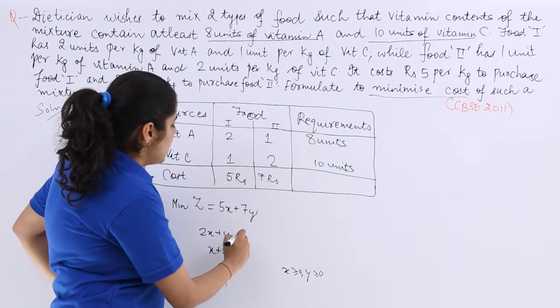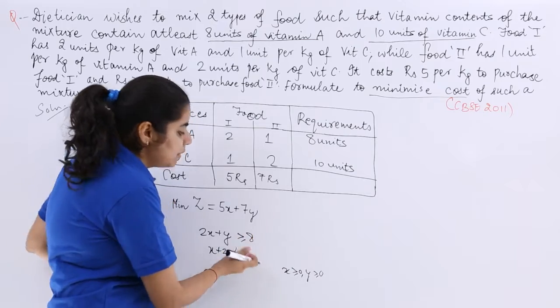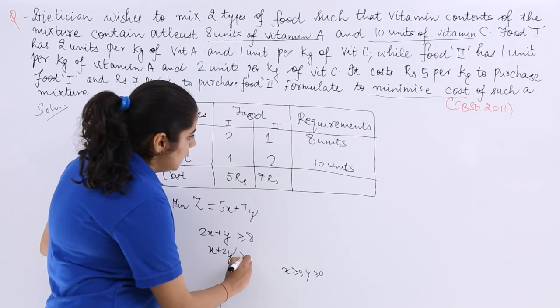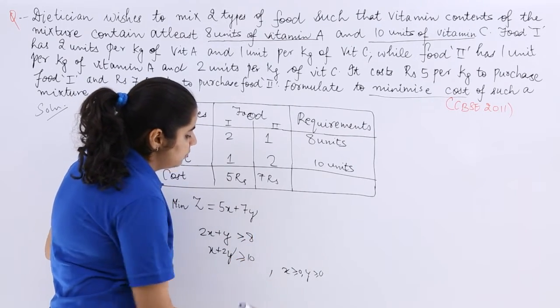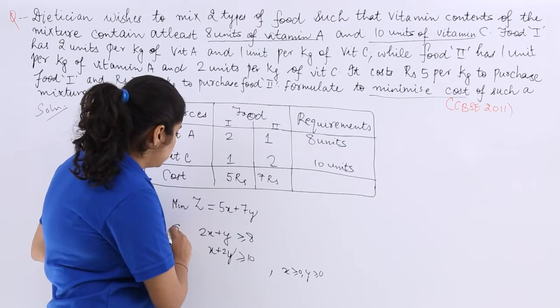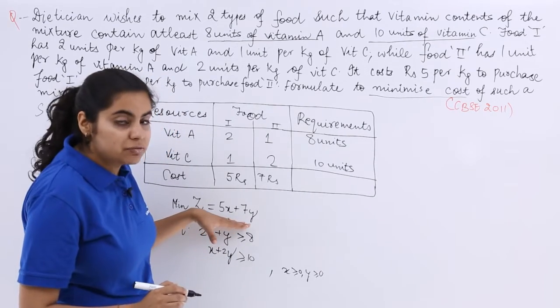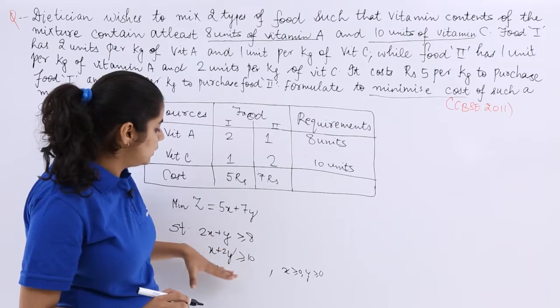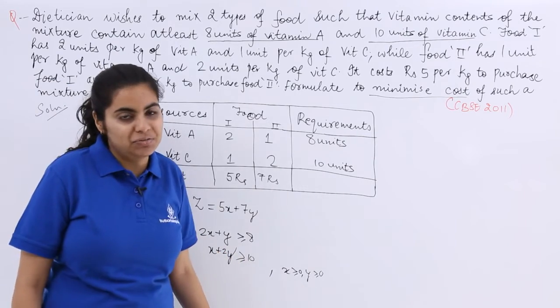So I have minimum is 8 so it can be even greater than, and here minimum is 10 it can even be greater than. So what are the conditions? Minimize the objective function Z subject to these constraints and these are the non-negative constraints.